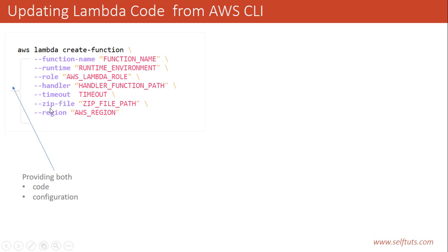The code is the path of the zip file we want to upload, and configuration includes timeout, handler, role, runtime, and other settings. But when we are trying to update the Lambda function, it is a two-step process. The first step is either uploading new code or updating the configuration — you can't update both things in a single command.